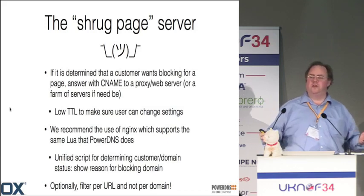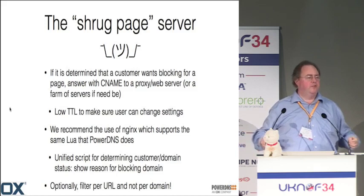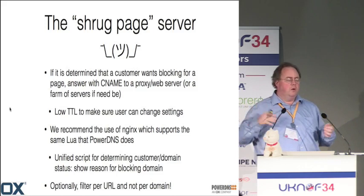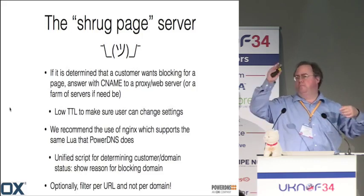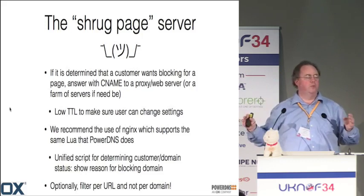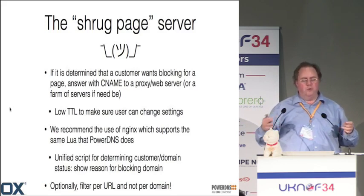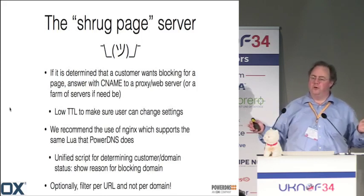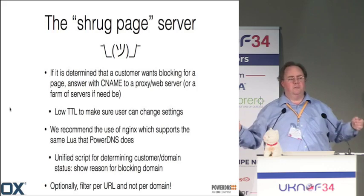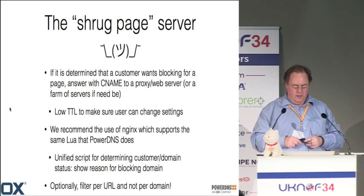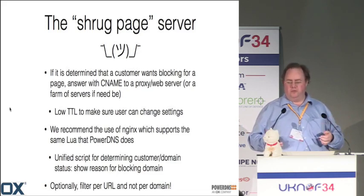The final component is: someone tried to visit a page and you blocked it — or your parents blocked it, or your wife more likely. Then there's a page that says, sorry, we cannot display this to you. A nice way to do this is to spoof an answer with a CNAME to badpage.powerdns.com, hand out a bunch of IP addresses with a really low TTL — so if someone changes their filtering settings they quickly get a new IP. We use Nginx, which also supports Lua, and you can load the same Lua code in both PowerDNS and Nginx. The blocking page can even say we blocked your page because it's gambling and you didn't want to see gambling — fully personalized. Nginx also allows filtering per domain or per page within a domain.